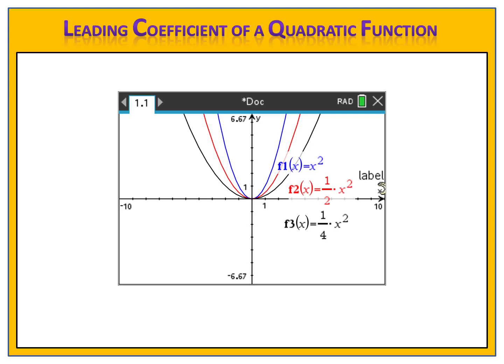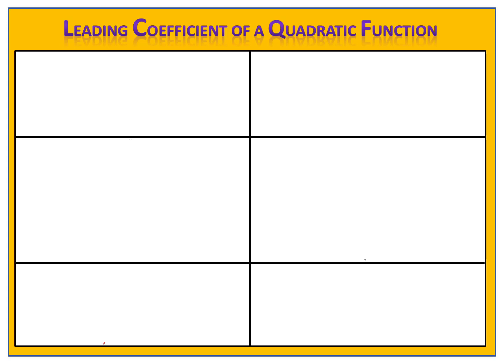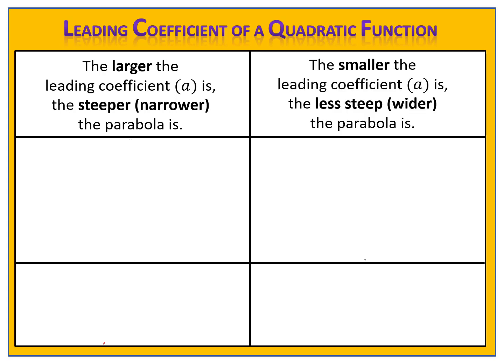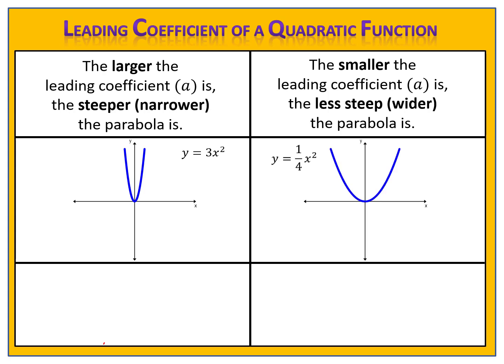We can put these observations into a table to keep track of them — they're very important. The larger the leading coefficient a is, the steeper or narrower the parabola is. And the smaller the leading coefficient is, the less steep or wider the parabola is. We can write out two graphs to compare this. For instance, y equals 3x squared versus y equals one-fourth x squared. Notice the parabola that has the smaller leading coefficient, one-fourth, is much wider and less steep than the parabola that has the larger leading coefficient of 3.